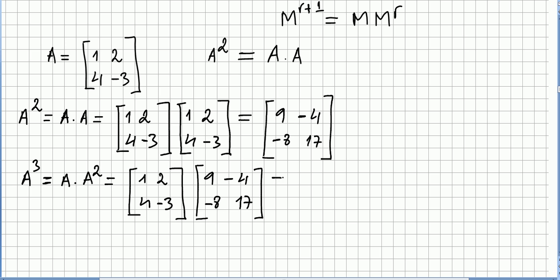So we perform this operation. And we get minus 7, 30, 60, minus 67, so we can keep on. A to the power of 3 is equal to A times A to the power of 2. And we get this.